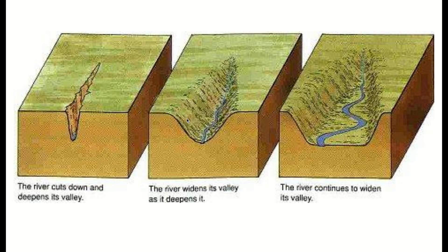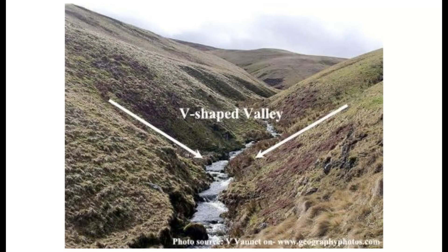Eventually, due to hill slope processes which we'll cover, the river valley widens as it moves down towards the middle course. In the middle course the valley is much wider, and this is where horizontal erosion starts to take over, widening the valley mainly due to meanders, which we'll cover in Wednesday's lesson.